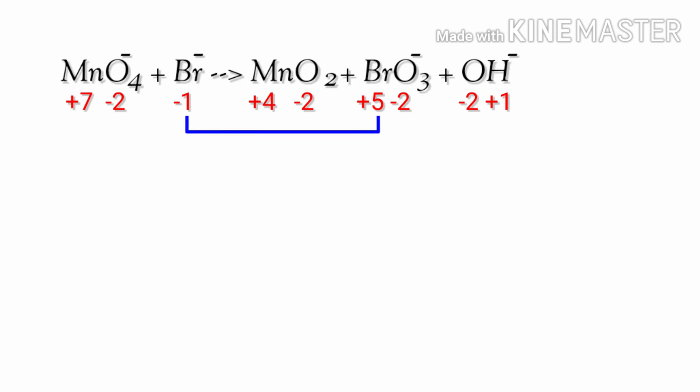In this reaction, the Bromine has charge of minus 1 and it's changing into plus 5, so Bromine is being oxidized. The manganese has charge of plus 7 and it's changing into plus 4, so manganese is being reduced.